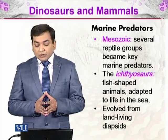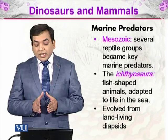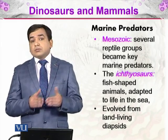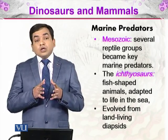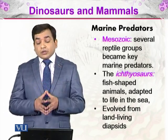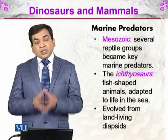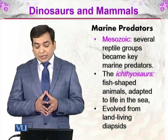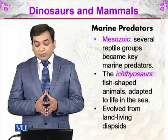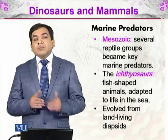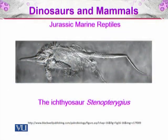Several reptile groups became key marine predators. These ichthyosaurs — ichthyo means fish and saurus means lizard — were fish-like animals adapted to life in the sea. They evolved from land-living diapsids, so first they were living on land and then they migrated into the sea. Here you can see one ichthyosaur which is Stenopterygius.